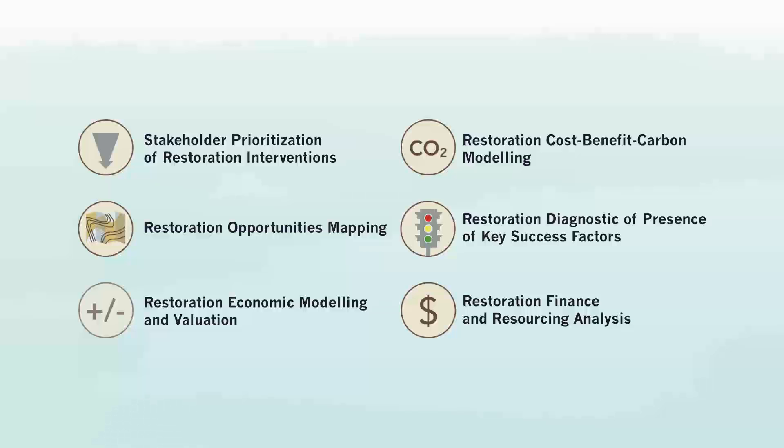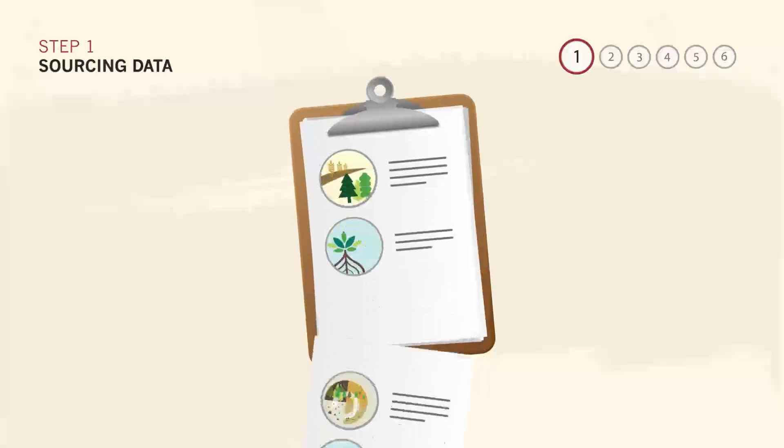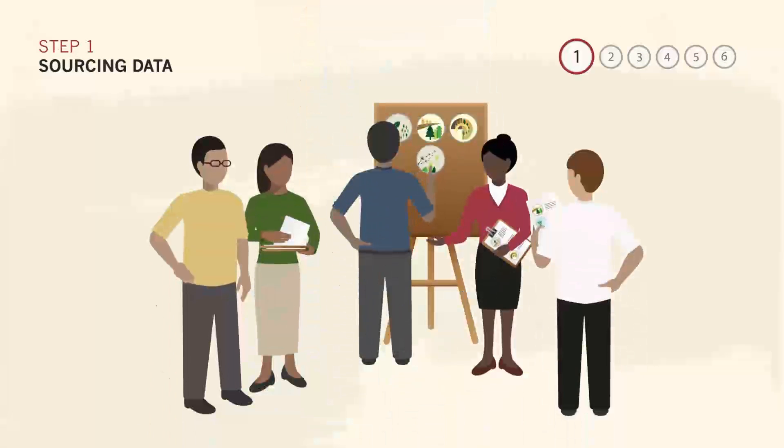Analysis 1: Stakeholder Prioritization of Restoration Interventions. The first analysis in a typical restoration assessment aims to prioritize restoration interventions and activities. In Phase 1 of ROAM, you identified a long list of possible restoration activities, including those that can improve degraded forest, agricultural and protective lands. Now is the time for stakeholders in your assessment regions to pick the best activities based on local goals and needs.